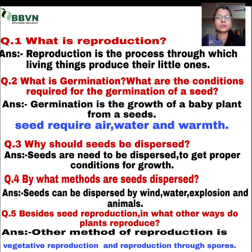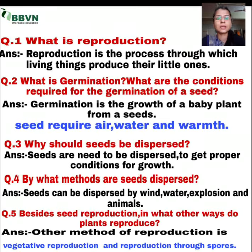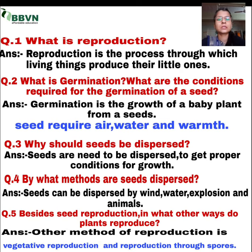Isliye jo farmers hoti hain, woh seed ko ek gap mein lagati hain, jis se jo bhi ek seed hai, usse apni proper conditions acche se mil paayein aur woh acche se growth kar paaye. So seeds need to be dispersed to get proper conditions for growth.